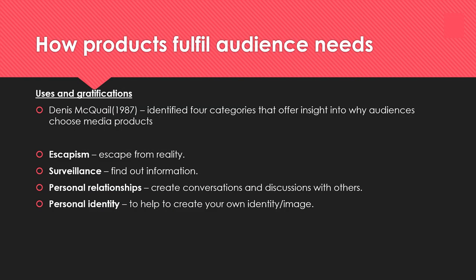One theory about how products fulfil audience needs is Dennis McQuail's Uses and Gratifications model. He identified four categories explaining why people choose a product. Escapism — to escape from the reality of the real world. Surveillance — to find out information. Personal relationships — to create conversations and talk with others about a product. And personal identity — to help you find yourself and develop your own identity and image through consuming media.